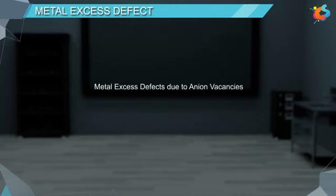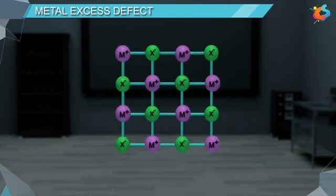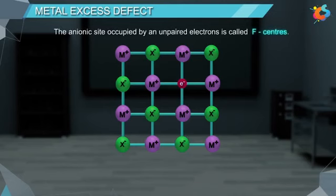Metal excess defects due to anion vacancies: in anionic solid, an anion may be missing from its lattice site, leaving a hole which is occupied by an electron to maintain electrical neutrality.